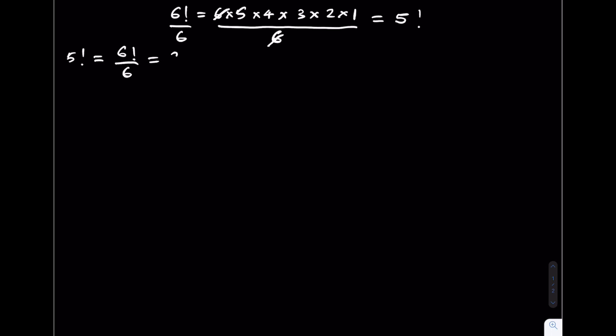which is equivalent to 720 over 6. This is equal to 120. In the same way, 4 factorial is given by 5 factorial over 5. This is equivalent to 120 over 5 which is equal to 24.